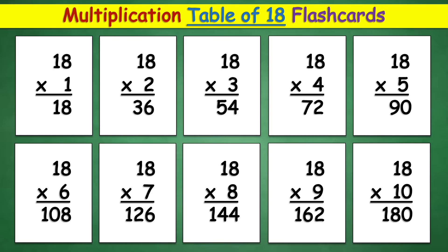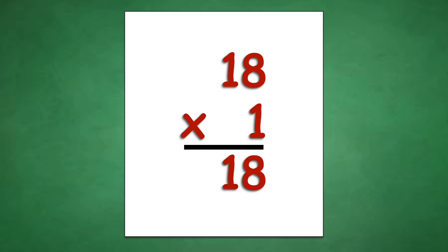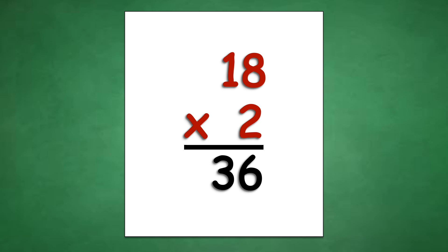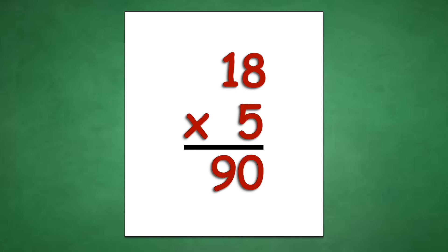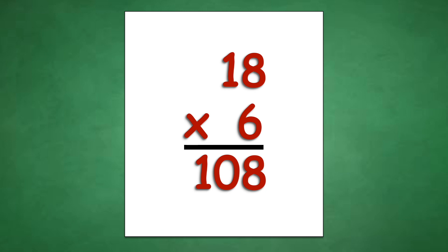Table of 18: 18 times 1 equals 18, 18 times 2 equals 36, 18 times 3 equals 54, 18 times 4 equals 72, 18 times 5 equals 90, 18 times 6 equals 108, 18 times 7 equals 126.